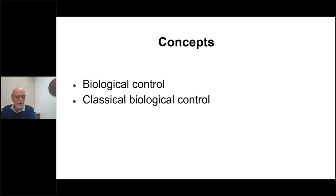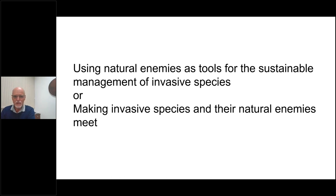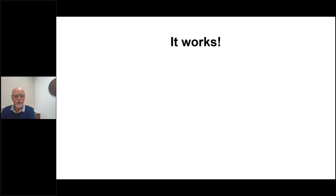Classical biological control is the use of natural enemies collected from the native range of invasive species and released to reestablish the balance between the invasive species and the natural environment where they are occurring. In a way it's making invasive species and their natural enemies meet — quite a simple concept, and it works. There are many examples over more than a hundred years.